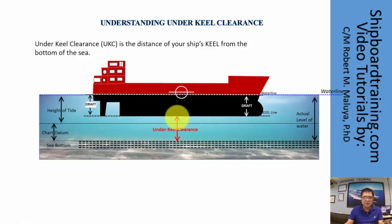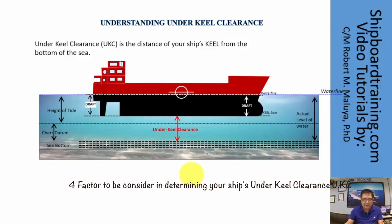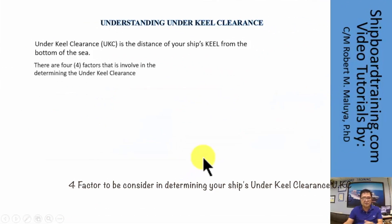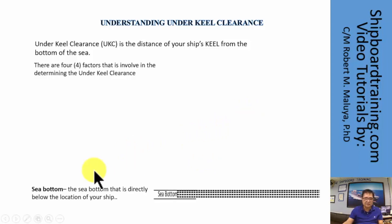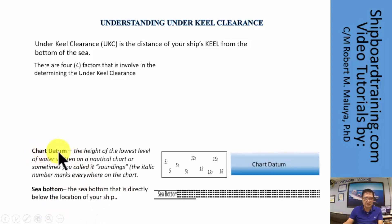Before we continue, let's study what the factors are that are involved in determining the underkeel clearance. There are four factors involved in determining underkeel clearance. The first factor is the sea bottom — the sea bottom that is directly below the location of the ship.